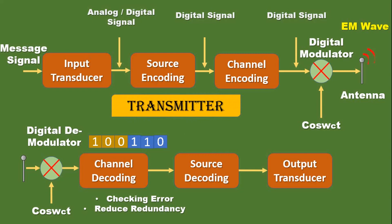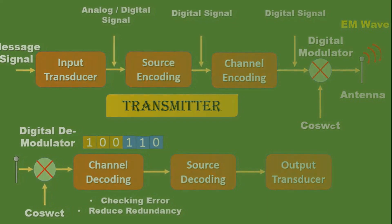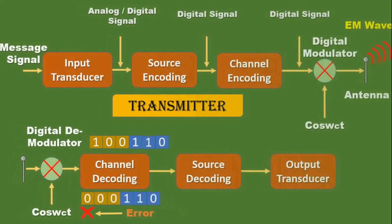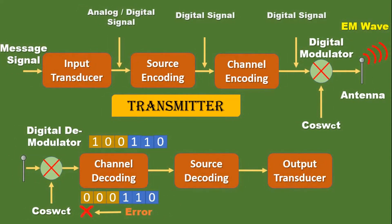After digital modulation, the signal goes to the antenna and is transmitted in the form of an electromagnetic (EM) wave. This completes the transmitter section. Moving to the receiver section, the receiving antenna receives the transmitted signal and passes it to the demodulator block, which is the first step at the receiver end. The received signal is demodulated and reconstructed here, then the signal is given to the channel decoder. The channel decoder detects the sequence, performs error corrections, and corrects distortions that may have occurred during transmission.